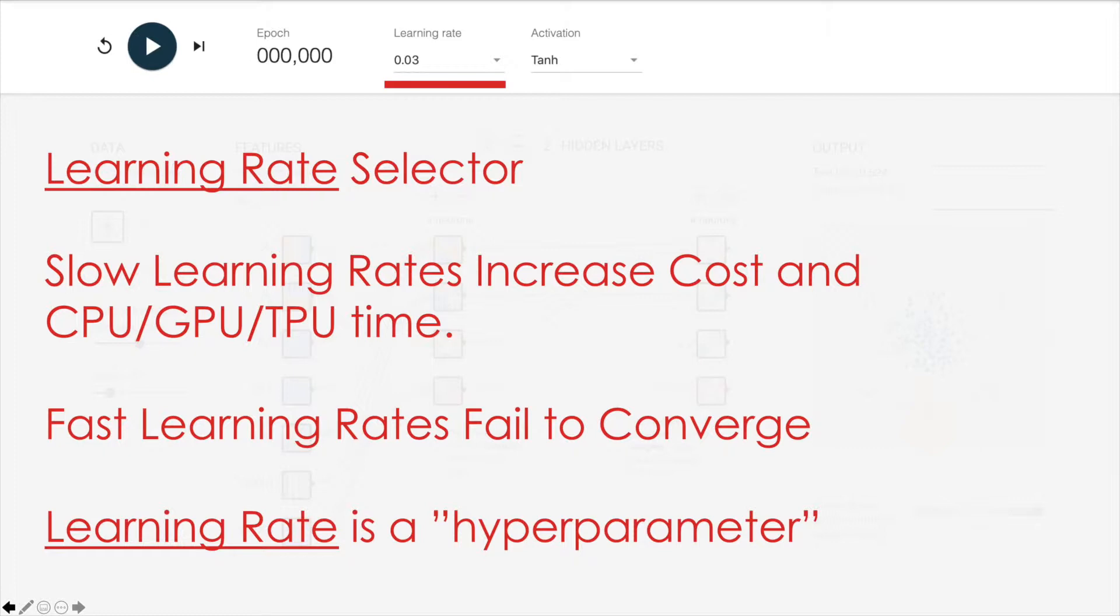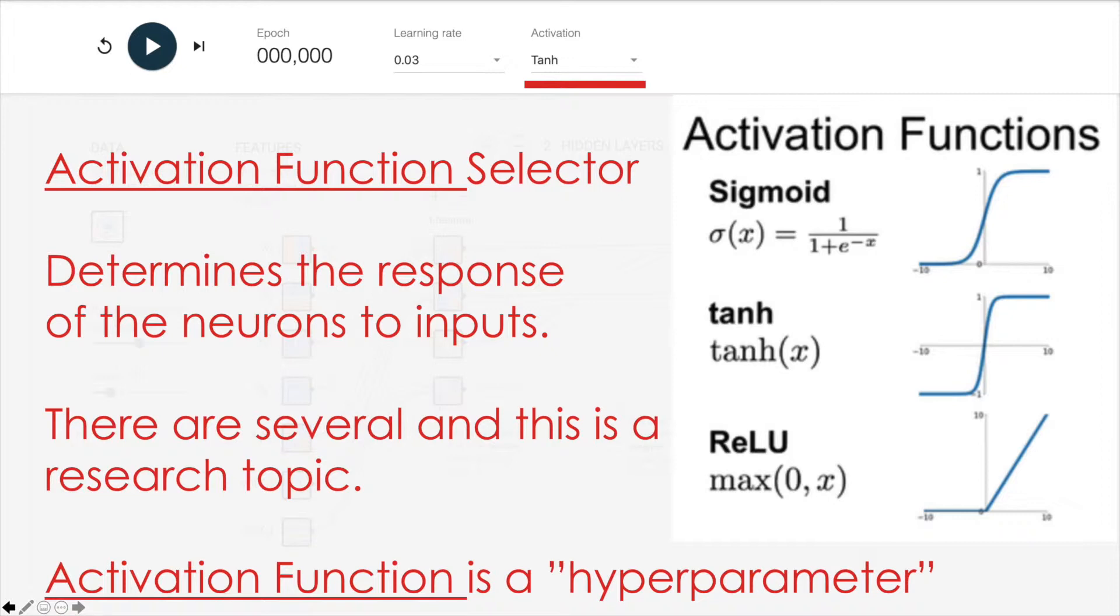Learning rate is one of a set of hyperparameters that tune the model and allow it to function at its best. And optimizing the hyperparameters is an open area of research. The next thing we have is the activation function selector. There's various types of activation functions, which basically say if I'm a neuron receiving inputs, here's how I'm going to respond and produce an output.